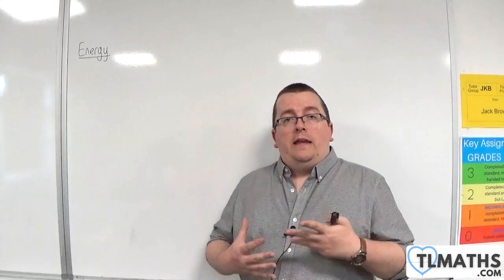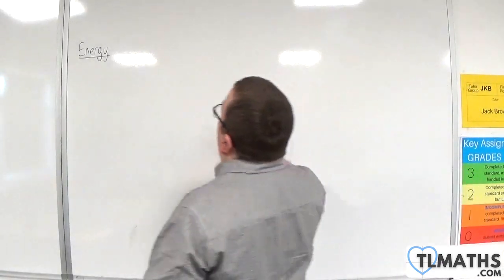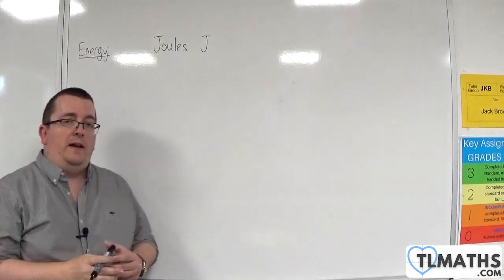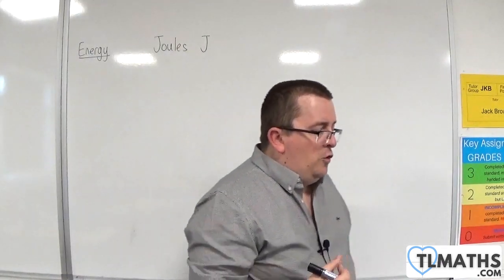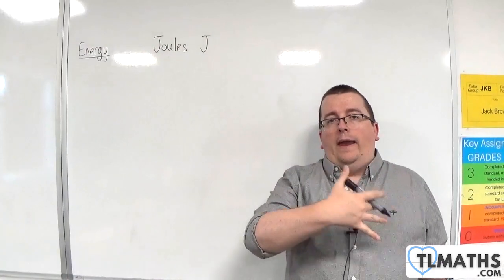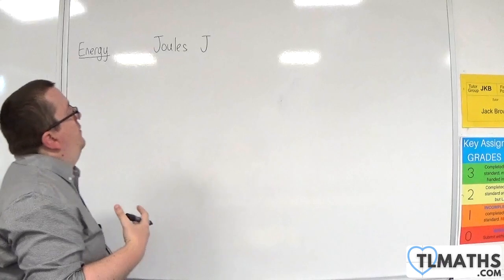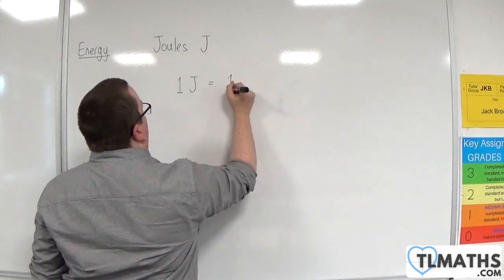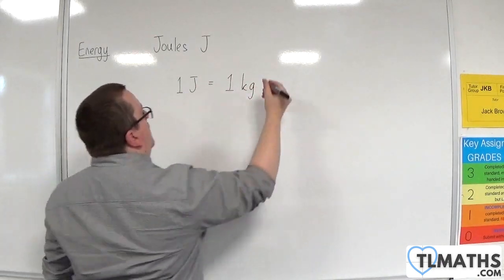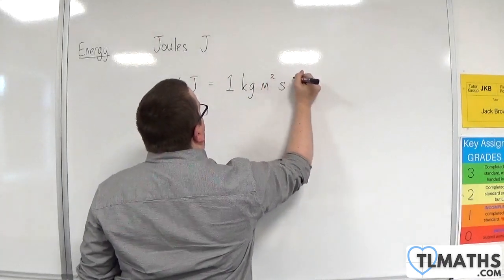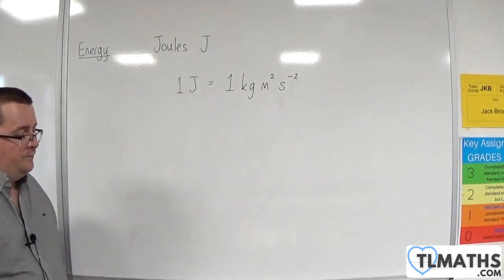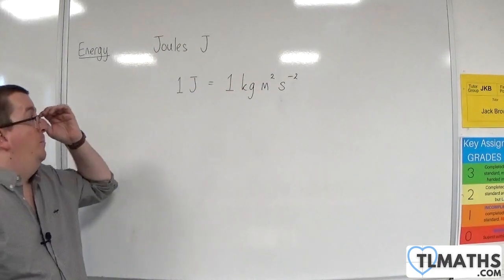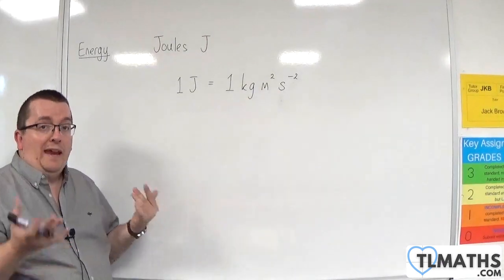Energy is measured in joules. We use the capital J to represent that. And if you're wondering how that breaks down into SI units, then one joule is one kilogram meter squared per second per second. Now, to the uninitiated, this will look very complicated, but you may well have met what a newton is.